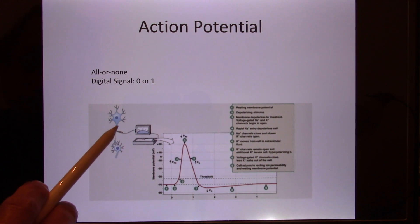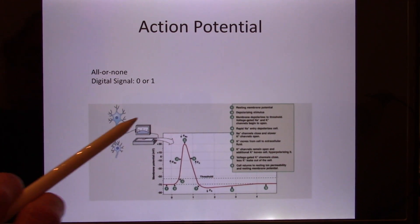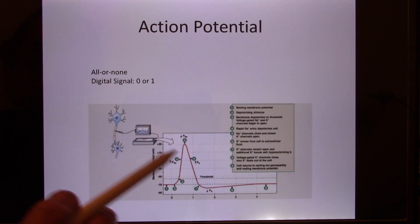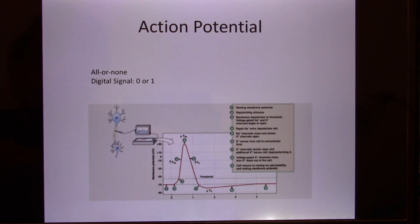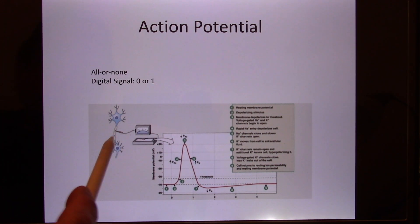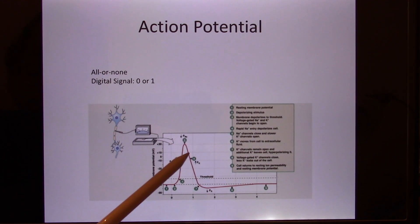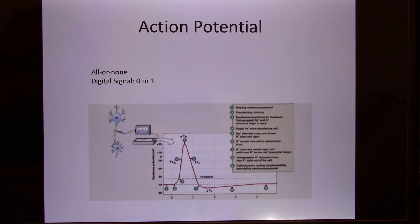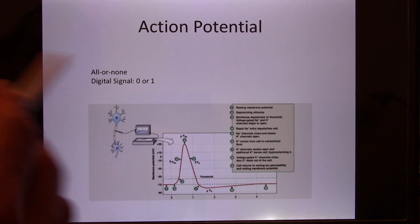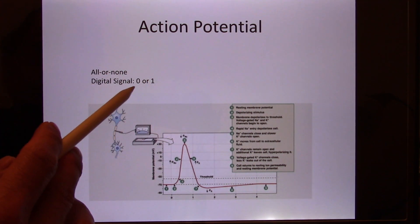This action potential opens the neighboring voltage-gated ion channels, so the signal keeps propagating without decaying — traveling all the way from Dallas to Alaska. Scientists call this the all-or-none principle: either you have a supra-threshold stimulus and generate one action potential, or the signal is too small and no action potential occurs. You don't have a half or partial action potential — it's always the same size, like a digital zero or one.